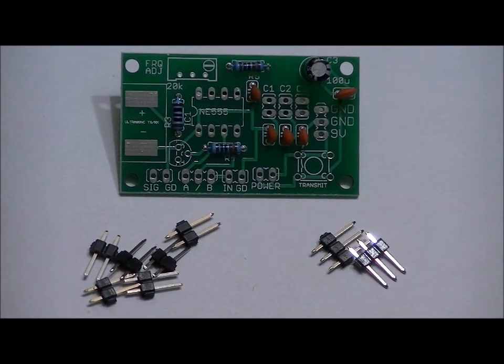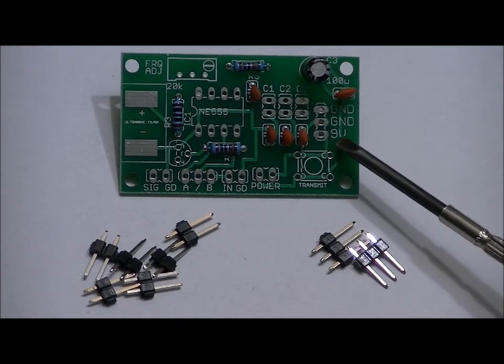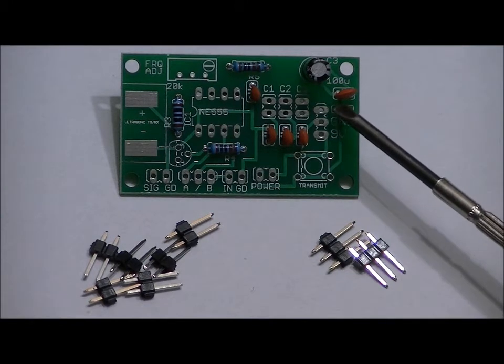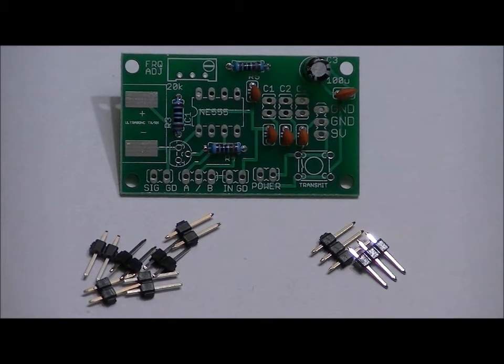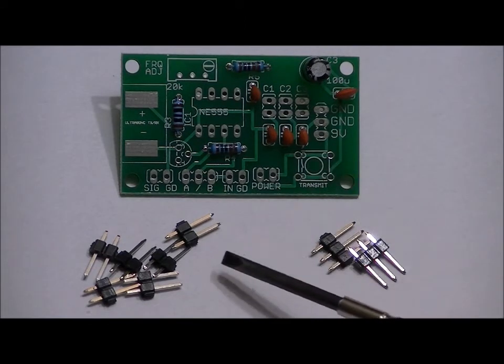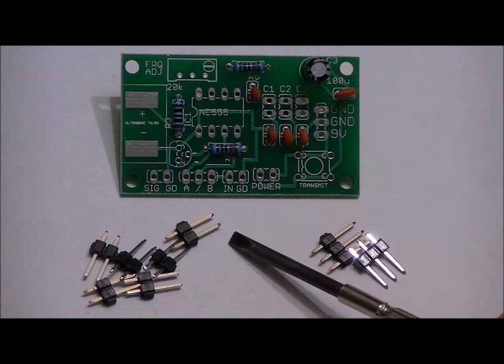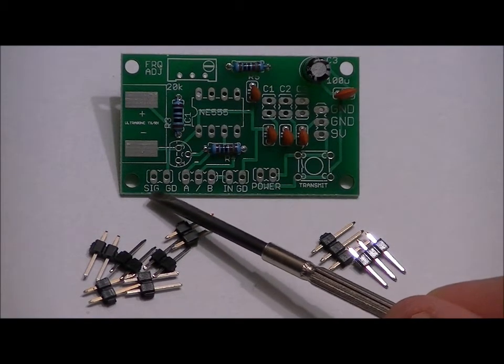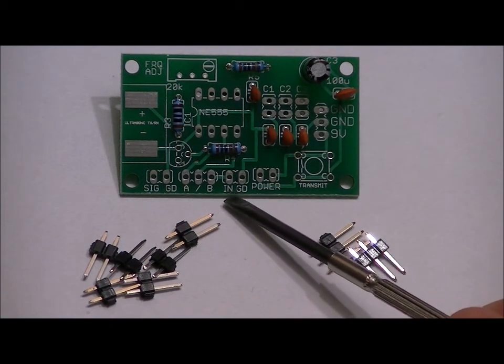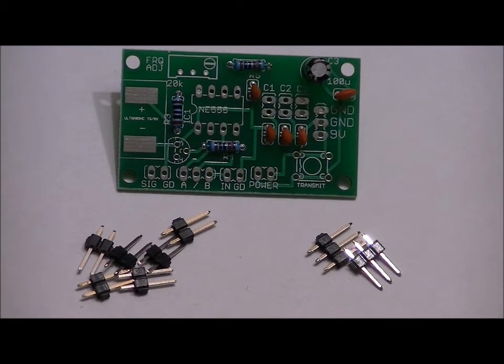Solder that up, and next we will do our 3 pin headers and our 2 pin headers. So, two 3 pin headers, six 2 pin headers. Our 2 pin headers go here, this is our power slot, labeled 9VGD and GND and GND. And our second one goes right here, labeled A slash B. And our six 2 pin headers go under C1, C2, C3, and right here, SIG, GD, IN, GD, and power. Solder those into place, and next we'll solder our power button.